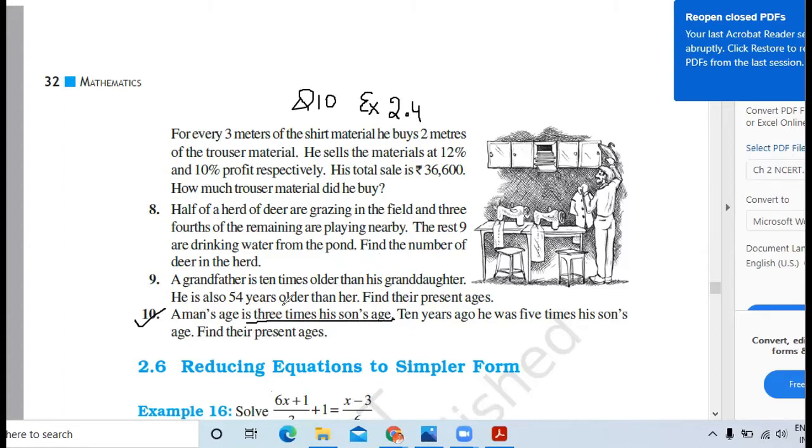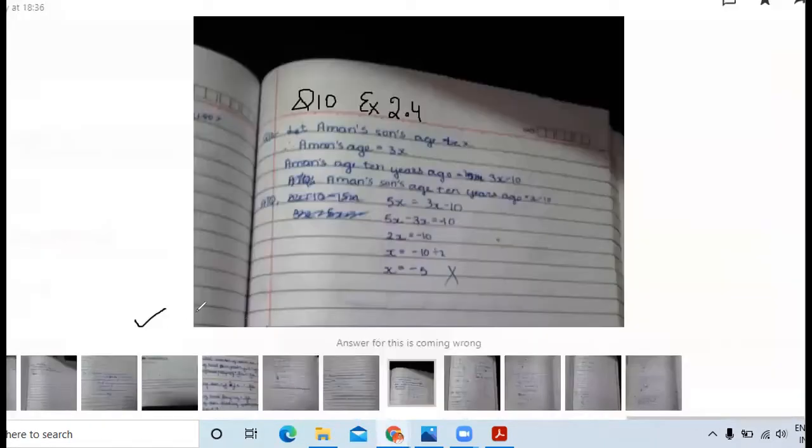Aman's age is three times his son's age. Let's see what you have written. Let Aman's son's age be x, therefore Aman's age is 3x. Very good.